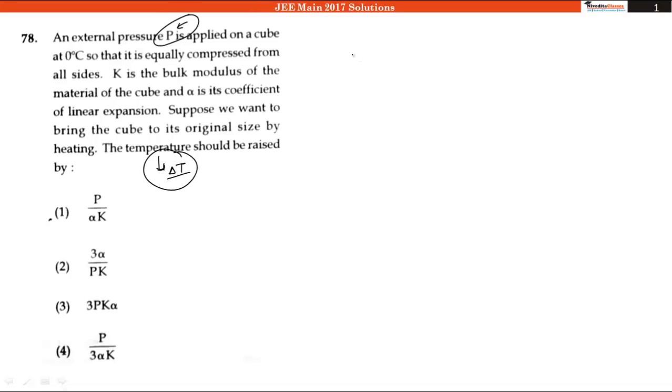Bulk modulus K can be written as excess pressure divided by volumetric strain, or we can write ΔV = PV/K. Rearranging, we have ΔV/V = P/K. This is our first equation.